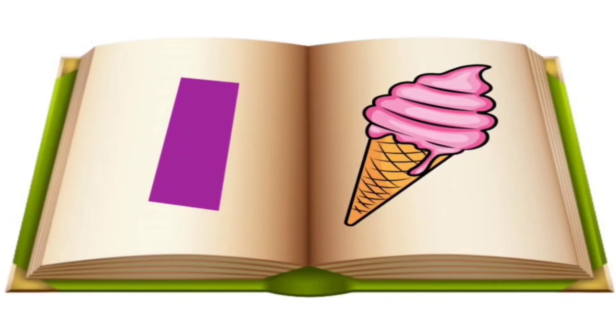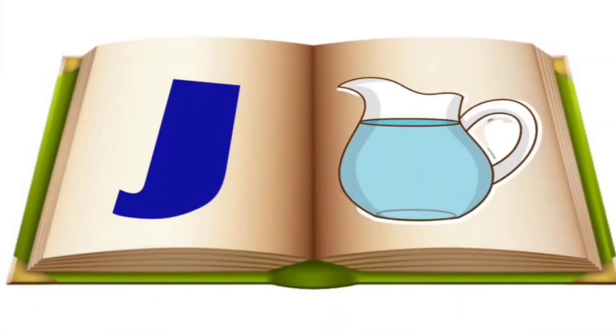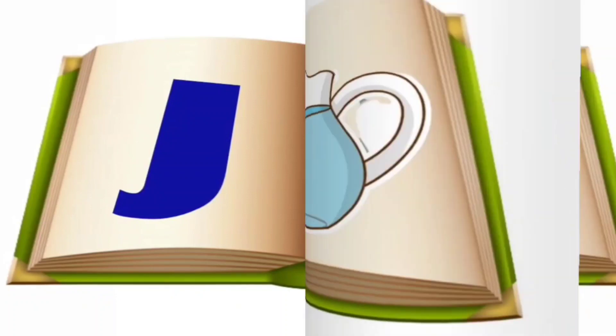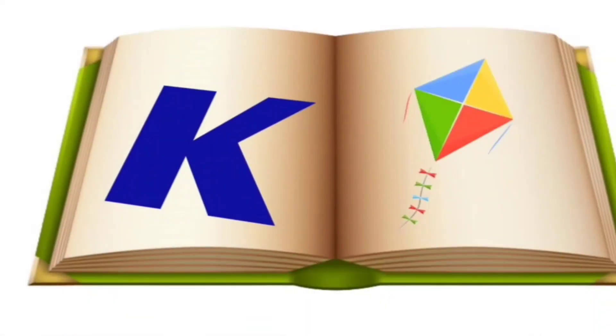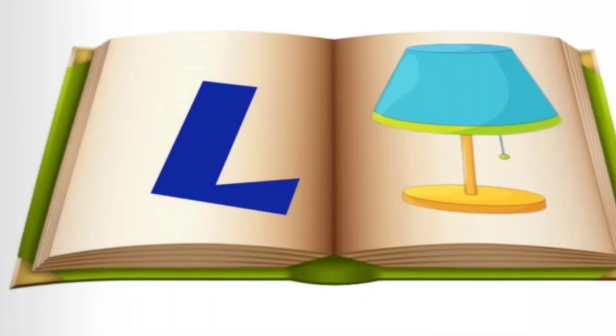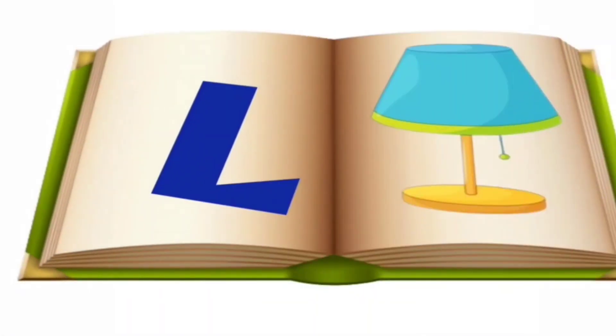I for ice cream, J for juke, K for kite, L for lamp.